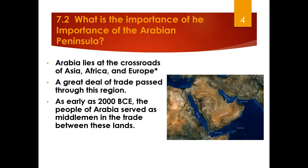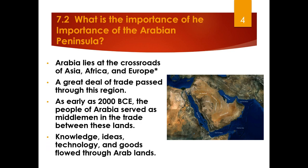As early as 2000 BCE, the people of Arabia served as middlemen in trade between these lands — very similar to what we learned about Ghana. Arabia was centrally located, and as a result of that central location it was extremely important. Knowledge, ideas, technology, and goods flowed through Arab lands, and this made Arabians smart, rich, and powerful. And if you're smart, rich, and powerful, that probably means you're going to have a lot of influence.